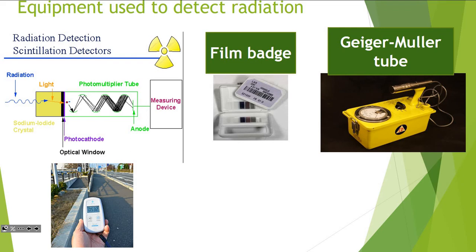A film badge actually works on basically how much radiation you get — it changes colors. So the more radiation you get, the darker it becomes. A Geiger counter is like the Ghostbusters device. It opens up, and in those little holes, radiation goes in, and you measure it by how many times it got hit.